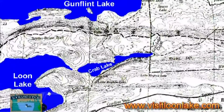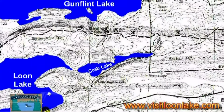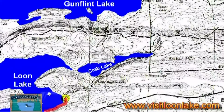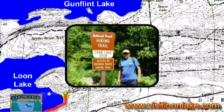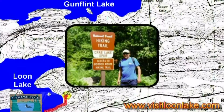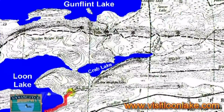You're going to start down in the lower left corner of the map here at Loon Lake Lodge, and you're going to walk to the Crab Lake Spur Hiking Trail, which is about a quarter of a mile from the Loon Lake Lodge parking lot up Loon Lake Road, right about here. You'll be walking on an old logging road that will end up at South Lake if you followed it to its end.